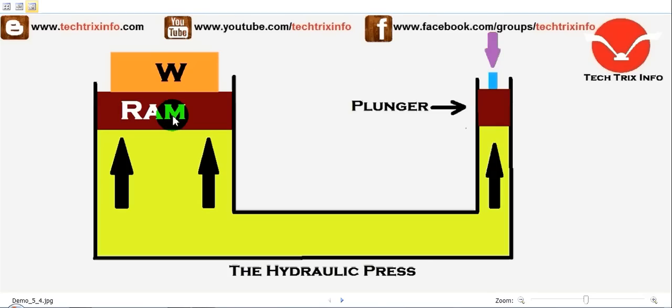This pressure exerted on the ram will make the ram move up as we move the plunger down, which will result in the displacement of the load. The workpiece will be moving up. This is the basic principle on which a hydraulic press is working.